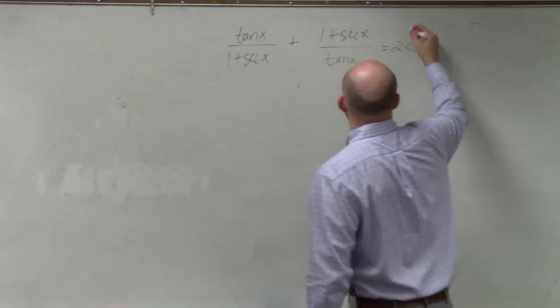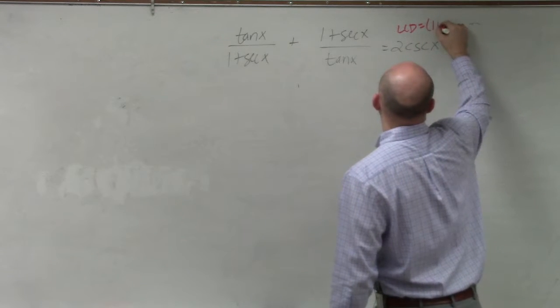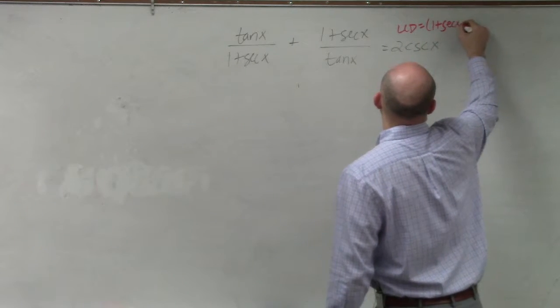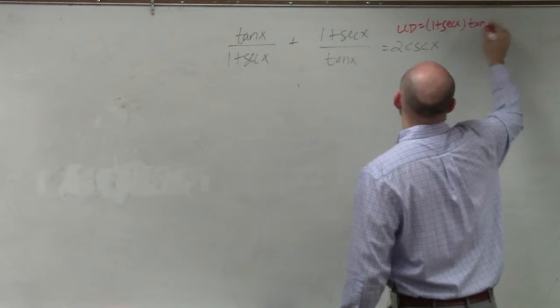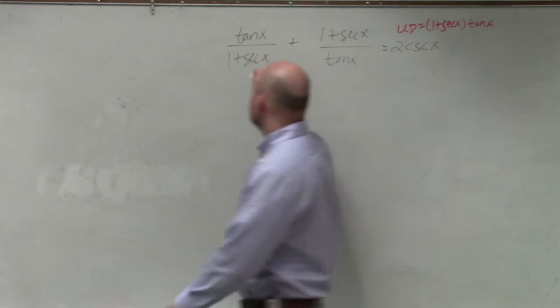So all you guys need to do is write down what the LCD is, which is just the product: (1+sec x) times tan x. It's just going to be the product of those two, of your two denominators.